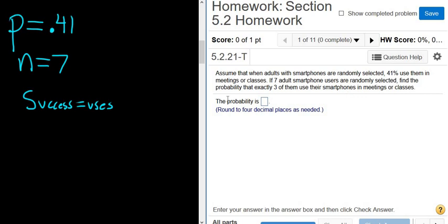So it says find the probability, big P, that exactly three of them use their smartphones in meetings or classes. So x is going to be the number of people who use their smartphones. Remember, x is successes. So x is exactly three. Exactly means equals three. So you find n, you find p. This says exactly, so you know it's equals.